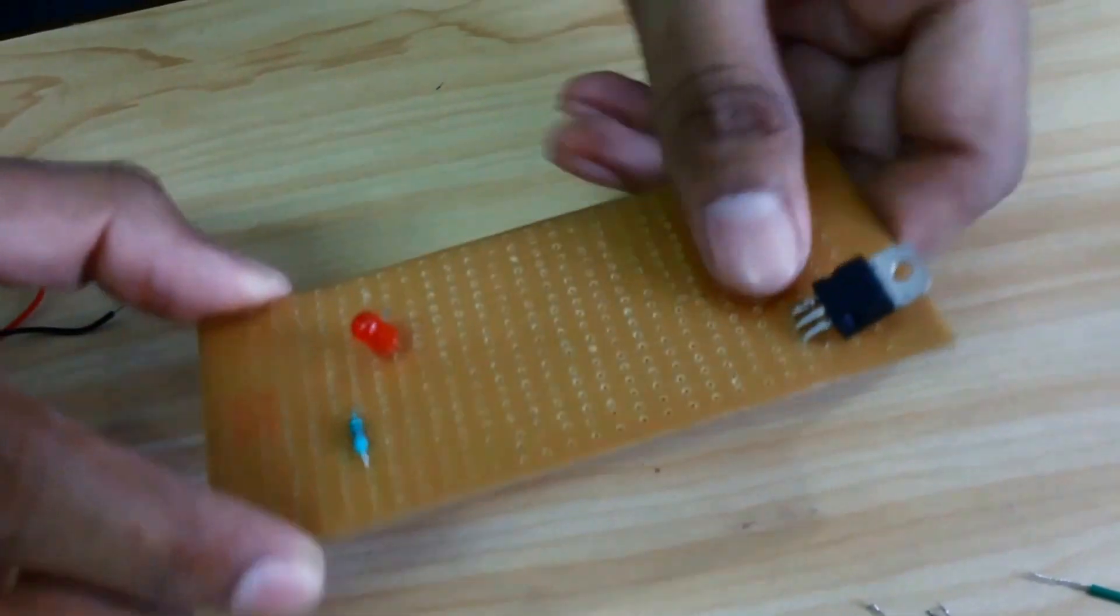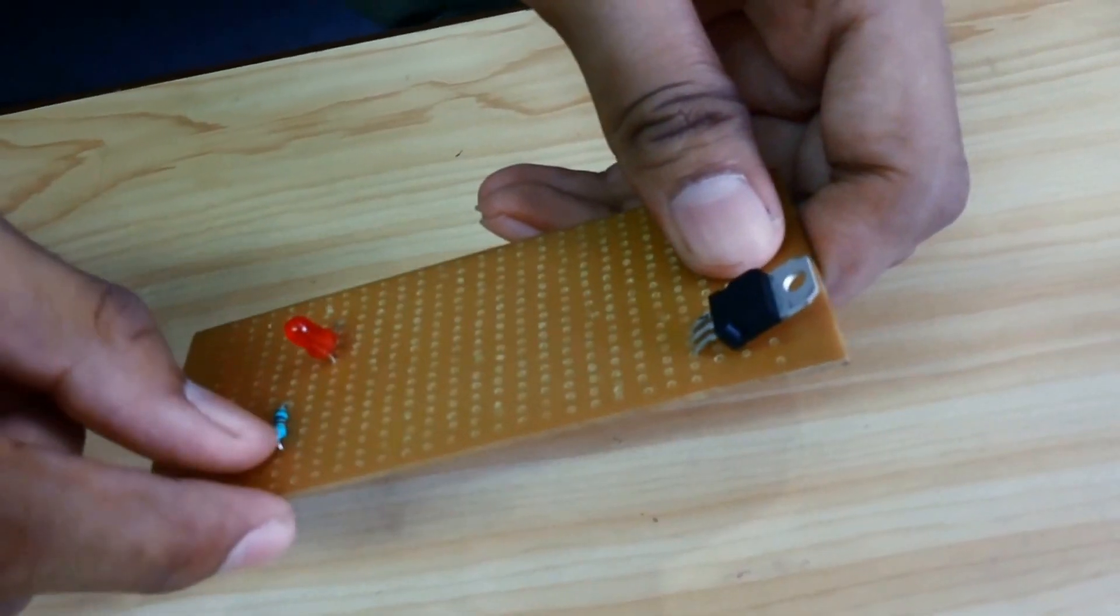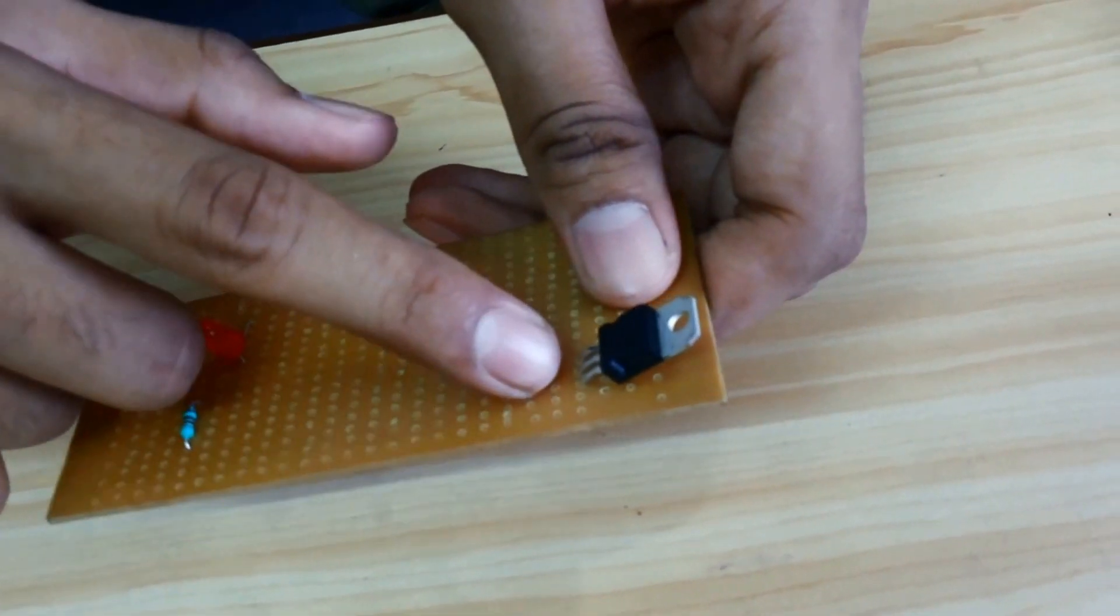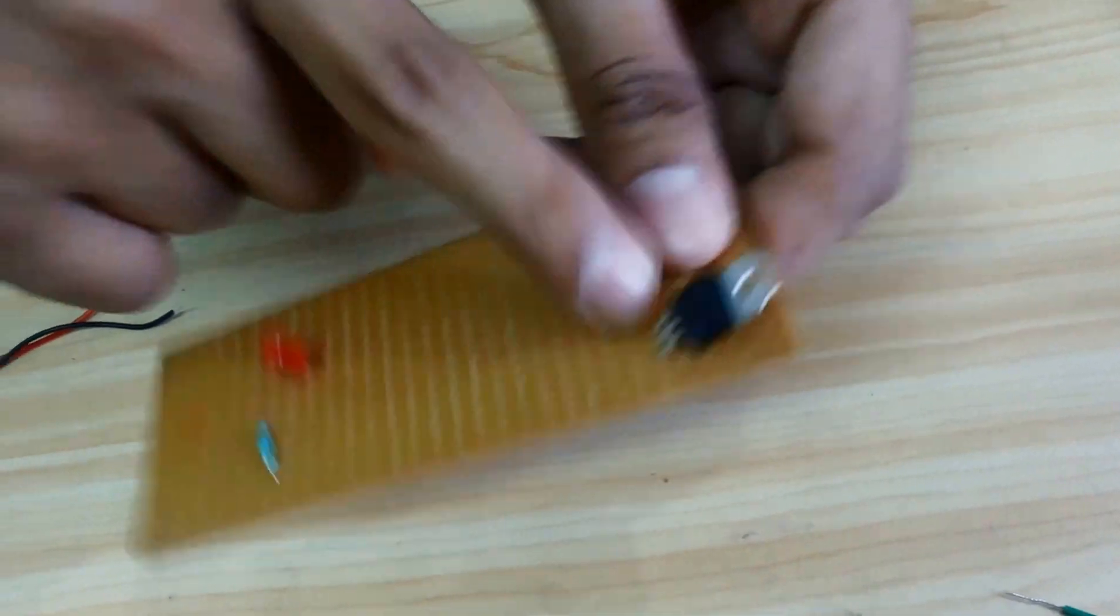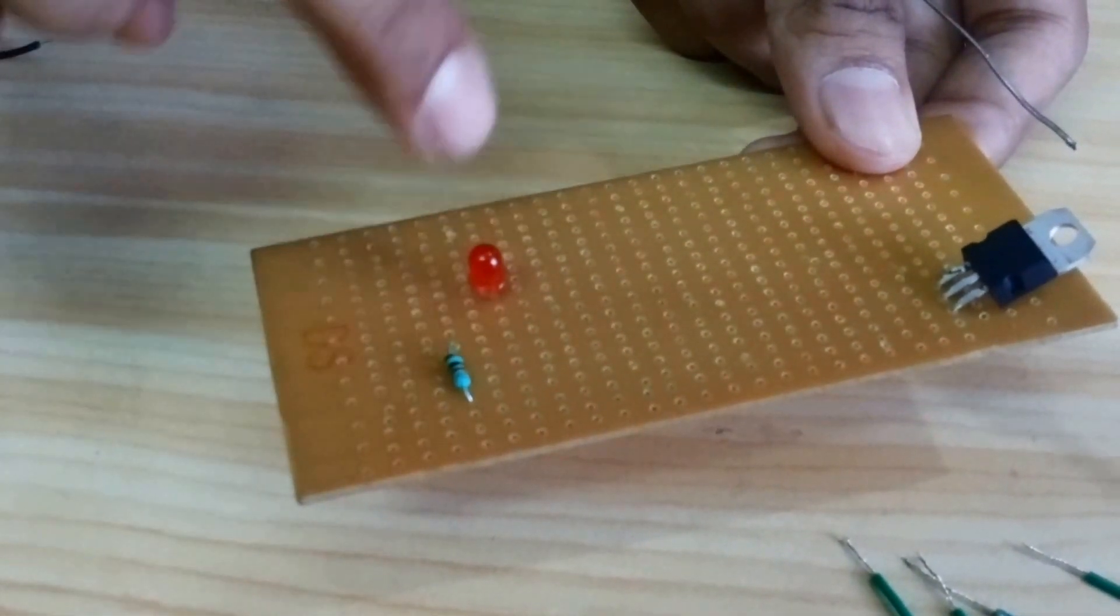The negative end will go to ground of the IC and the positive end will go to the input of the IC. Here is the input, and the LED and the resistance will be in series connection.